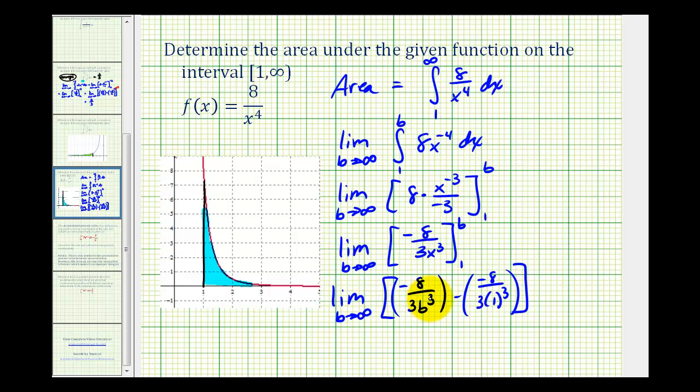notice how in this fraction the denominator is increasing without bound, and the numerator is fixed at negative eight. So this is going to approach zero, and this is not affected by b. This is going to be minus negative eight thirds, which will be positive eight thirds.